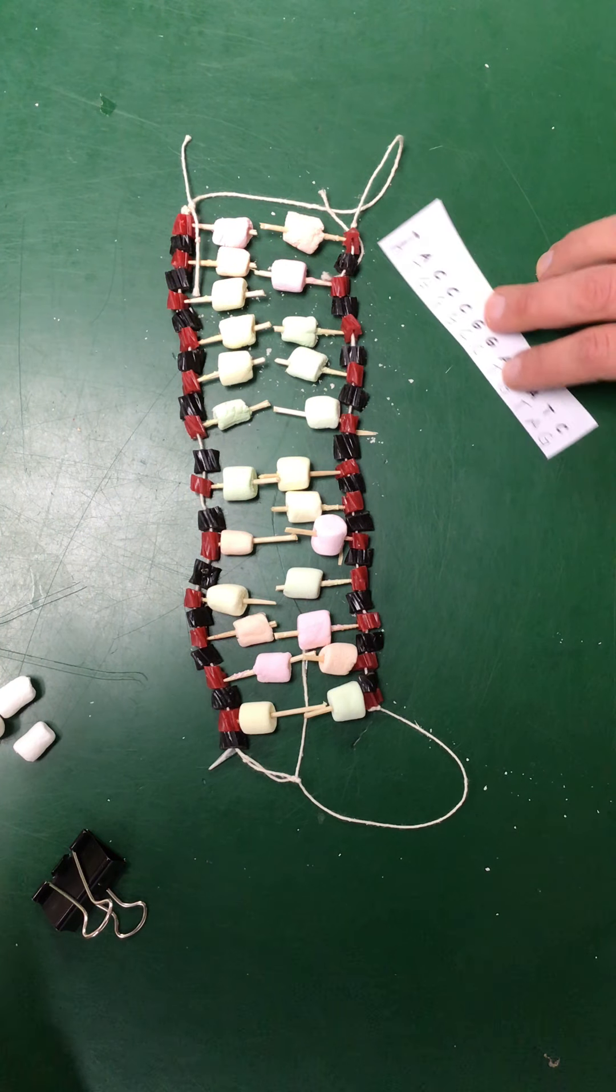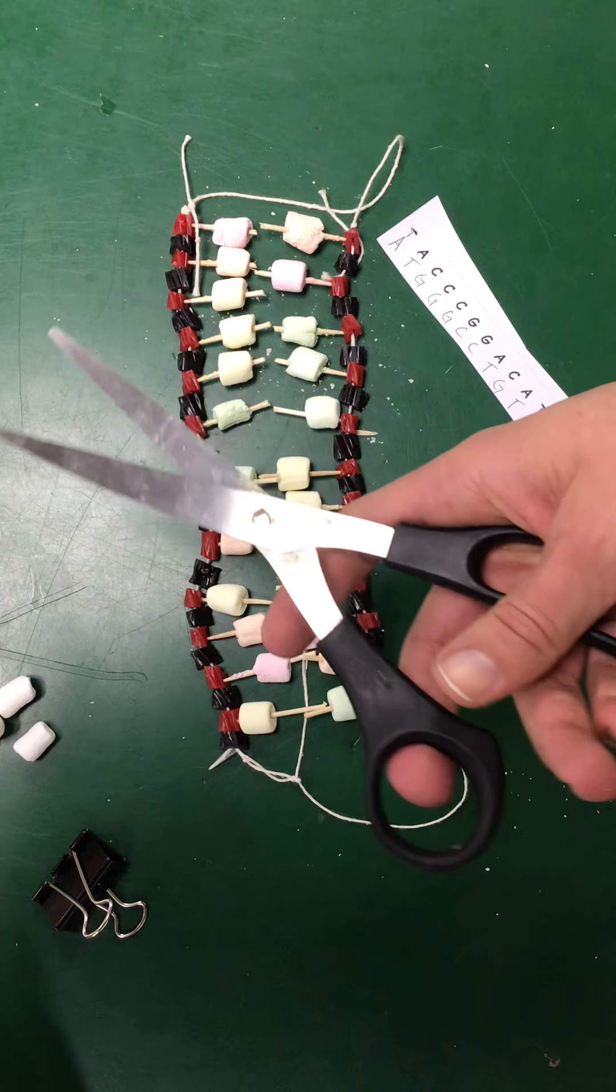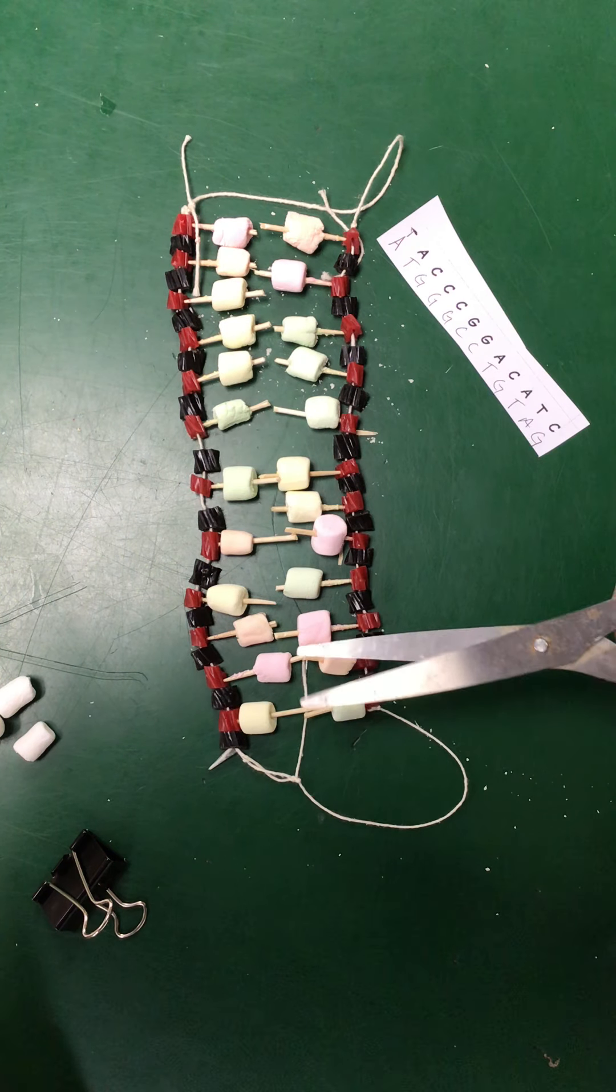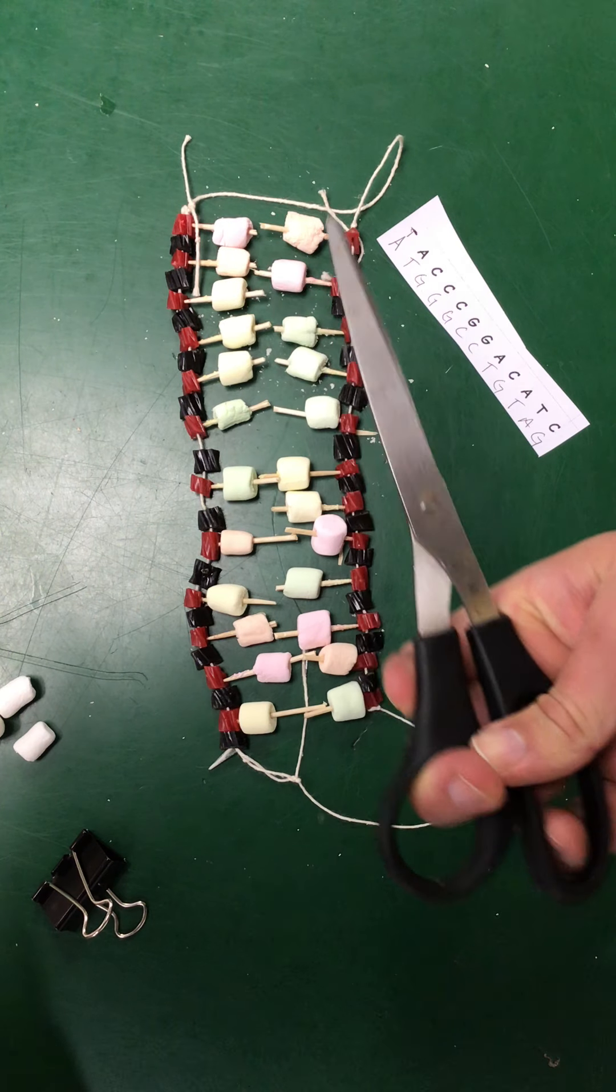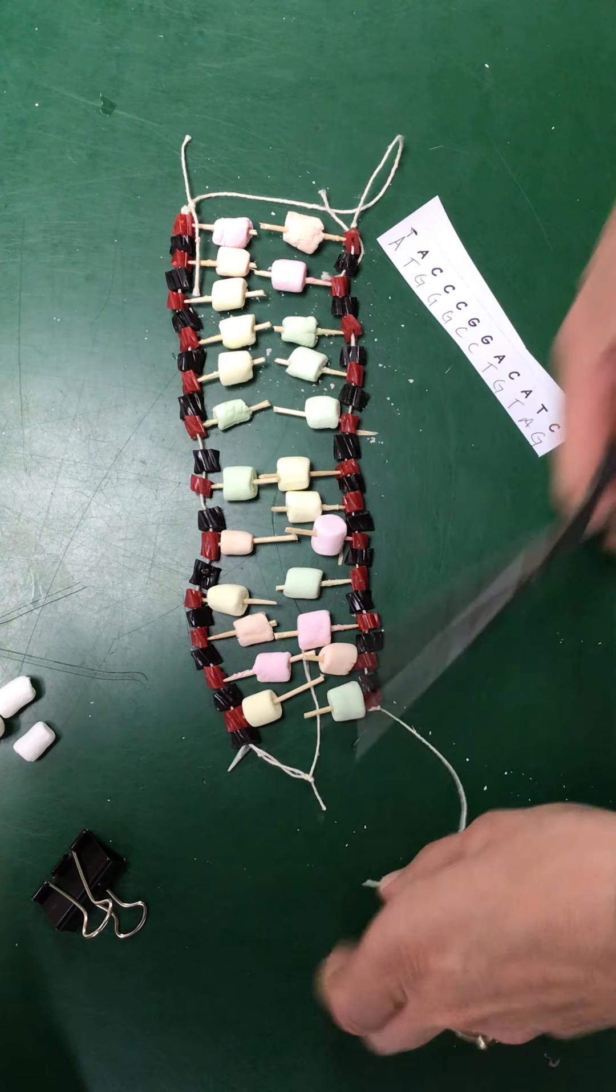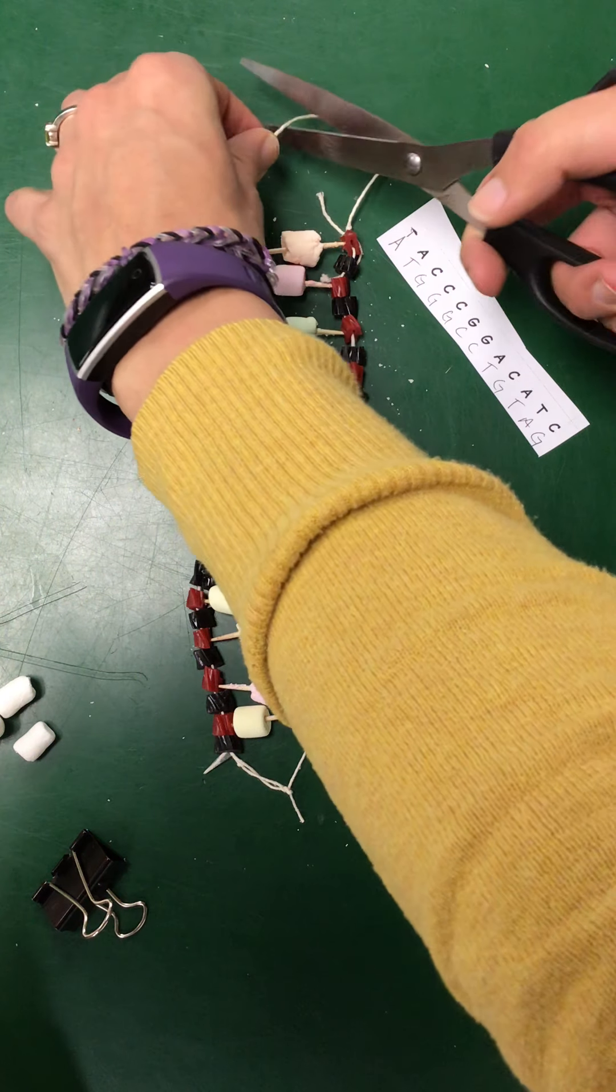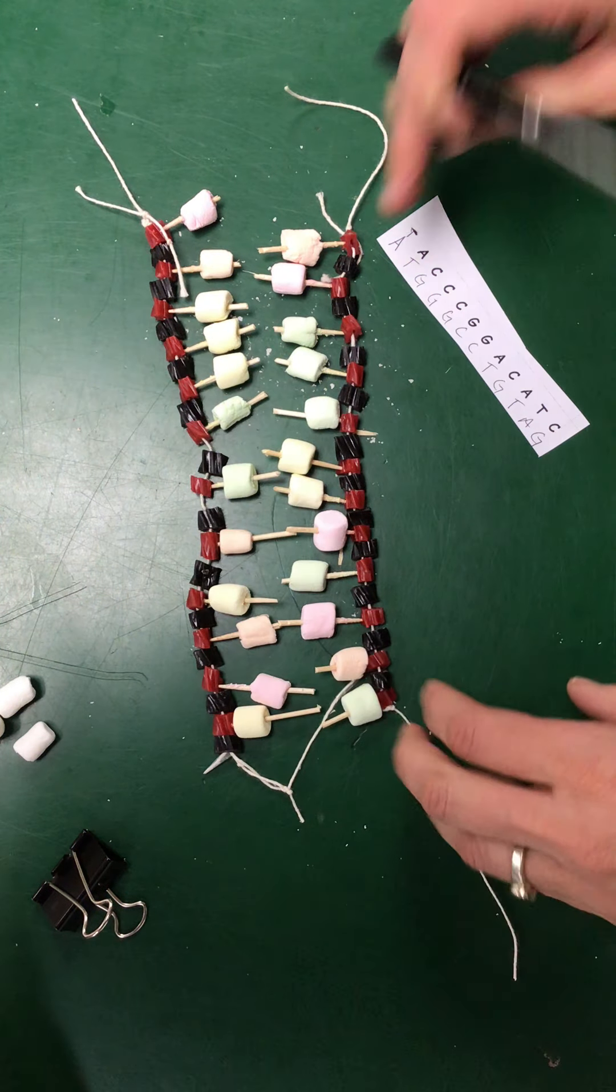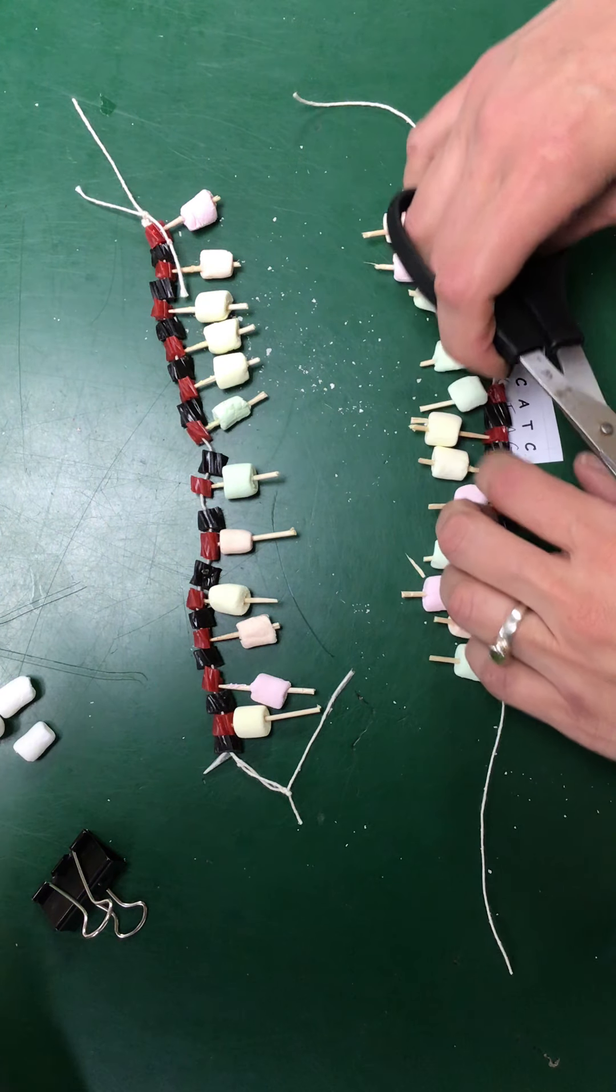So what I did is to model transcription, we took RNA polymerase, that enzyme that breaks those hydrogen bonds in our model, is a scissors. So RNA polymerase went through and it cut through all those hydrogen bonds and it's separating these DNA pieces here.